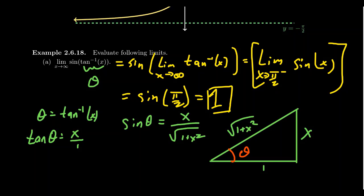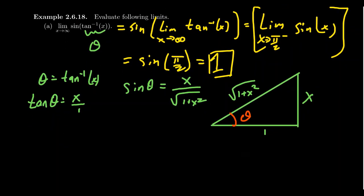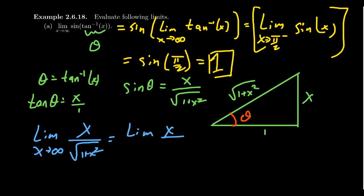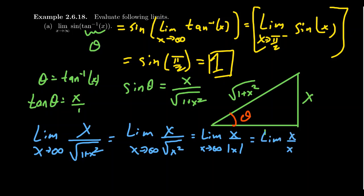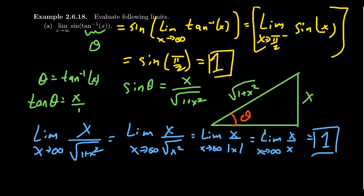So we can substitute sin(arctan(x)) with x / √(1 + x²). This function resembles the types of infinite limits we considered previously. Taking the limit as x approaches infinity of x / √(1 + x²): the dominant term on top is x, and the dominant term in the denominator is √(x²), which equals the absolute value of x. As we approach positive infinity, x is eventually positive, so |x| = x, and the expression simplifies to 1 — consistent with our earlier result.